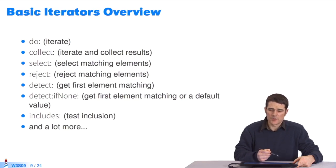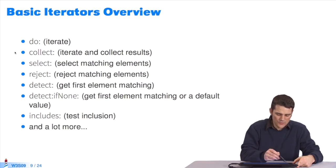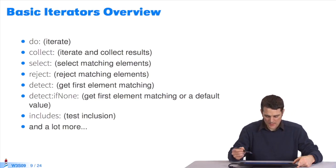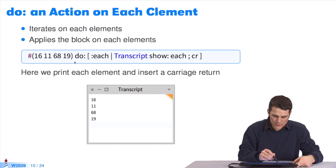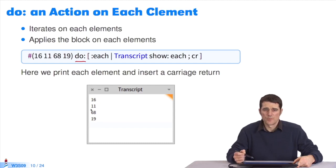Many iterators can be used to do this. We already saw do and collect. There are more: select, reject, detect, etc. We'll study a few of these later in this course. Do is the simplest iterator. It browses every element of the collection. We already studied it many times.